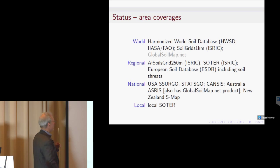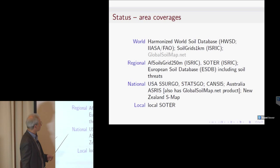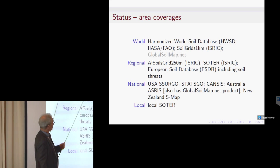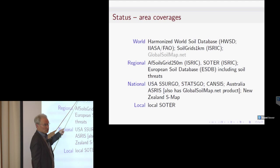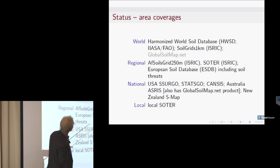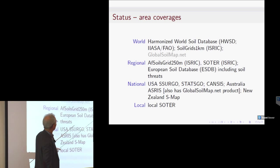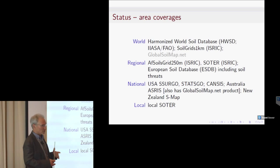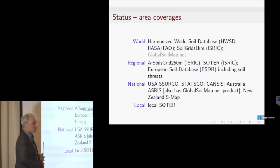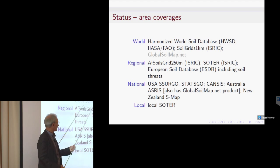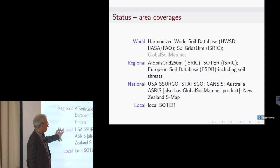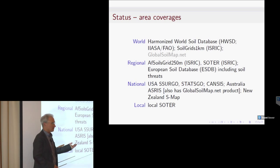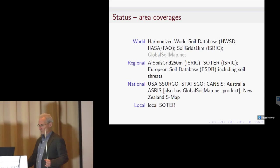Now the status: where are we today? At the world level, we have the Harmonized World Soil Database — originally from IIASA in Vienna, now moved to FAO and being worked on at ISRIC — and Soil Grids with Tom. Global Soil Map is in gray because very little has come out of that project. At regional level, there are projects from ISRIC and the European Soil Database. At national level, some major countries have full national coverages, but many don't. Examples include Germany and the Netherlands across Europe.